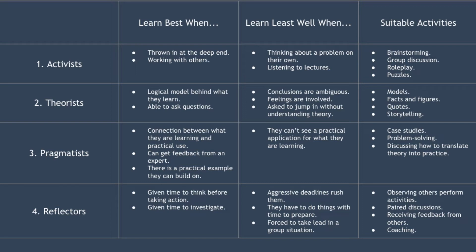Next we have theorists. These are people who learn best by understanding the theory behind why something is the way it is. They need models, concepts, and facts to be able to learn effectively. They enjoy analysing and assimilating information to form their own theories. They value logic and rational thinking, and what they are learning must have a logical purpose in order for them to engage with it. They like to be able to ask questions so that they can form their own opinions. Theorists learn best when there is a logical theory or model behind everything they learn, and when they have the opportunity to ask questions.